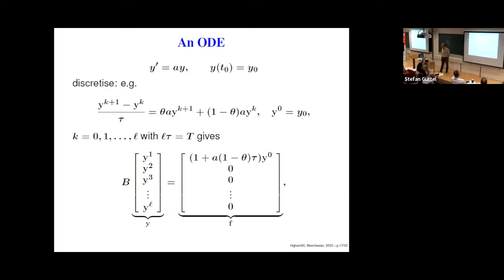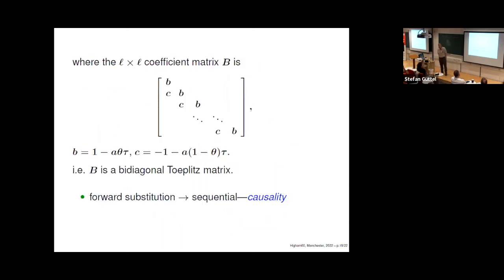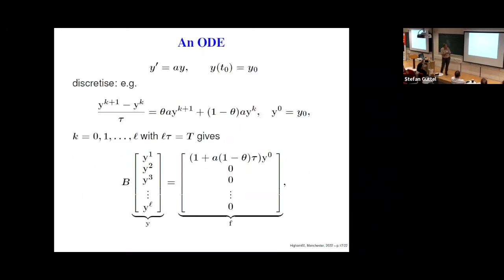Since I'm in Manchester — the home of ordinary differential equations — I should say something about linear algebra and differential equations. Let's solve a simple ODE: y' = Ay with an initial value. I discretize with a theta method — theta equals one is implicit Euler. You can write down the equations for y₁, y₂, ... at all L time steps, and the matrix B that appears is bidiagonal. The solution just requires forward substitution, which is the same as stepping sequentially for k = 1, 2, ...